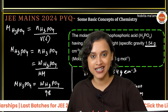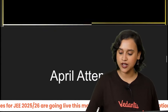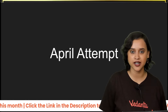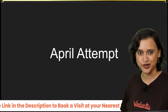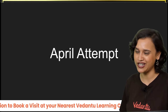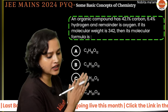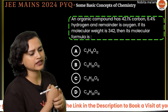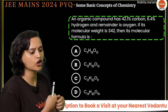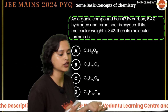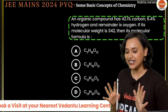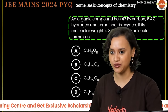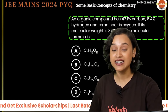See how easy those January attempt questions were! Now it's time to solve the April attempt. Here is the first April attempt question: an organic compound has 42.1% carbon, 6.4% hydrogen, and the remainder is oxygen. If its molecular weight is 342, what is its molecular formula?